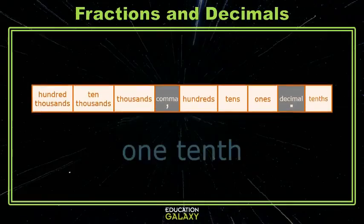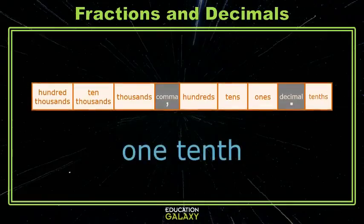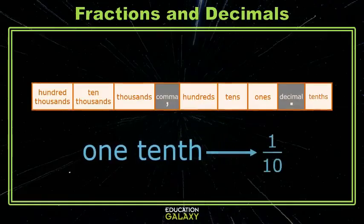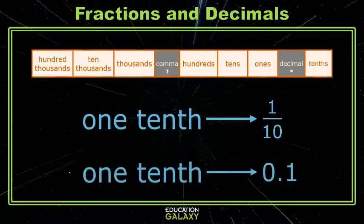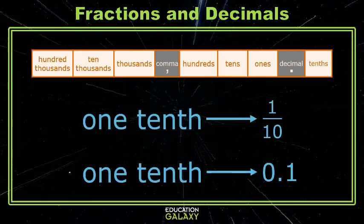So we can write out tenths as one-tenth with words. We also know this fraction, one-tenth. Now how do we write it with our new decimal friend? That's just going to be a one in the tenths place, separated from the ones by a decimal, and a zero in the ones place just to keep things pretty.